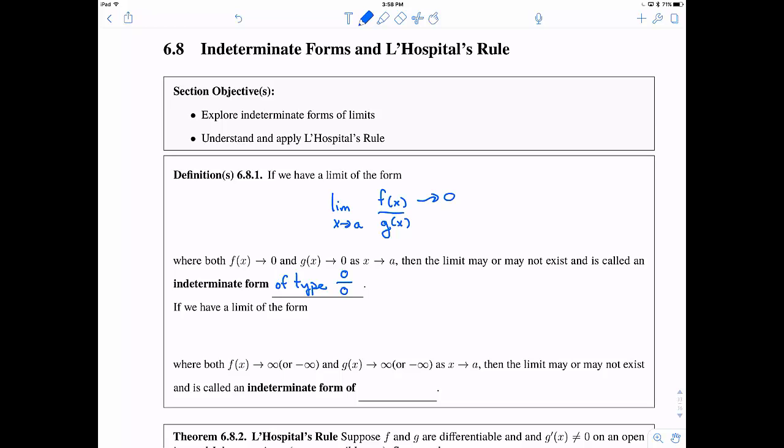And this kind of makes sense because f is going to 0, g is going to 0, so it looks like 0 over 0.